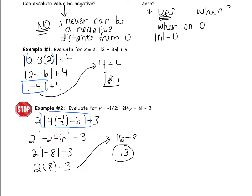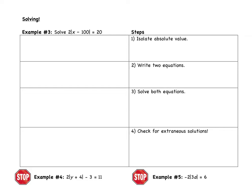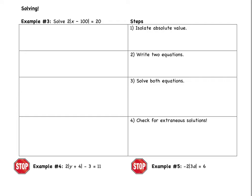Now we're going to move to absolute value equations — equations where we have an equal sign. There are 4 steps to solve an absolute value equation. Example 3: 2 times the absolute value of x minus 100 equals 20. Step 1 is to isolate the absolute value — get it by itself. We have a 2 being multiplied, so divide both sides by 2. The 2's cancel, leaving the absolute value of x minus 100 equals 10.